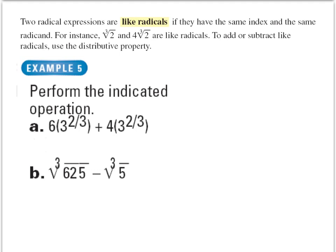We talked about simplest terms. Now we have to talk about like radicals. Two radical expressions are like radicals if they have the same index and the same radicand. For example, the cube root of 2 and 4 times the cube root of 2 are like radicals. They have the same index and they have the same radicand. Remember, the index is this number 3. The radicand is the number under the radical. To add or subtract radicals, you have to use the distributive property.